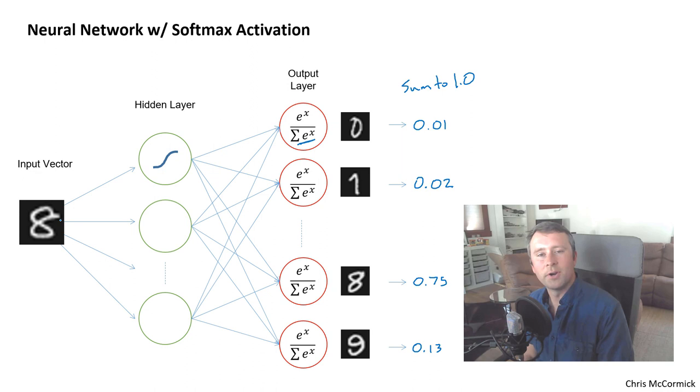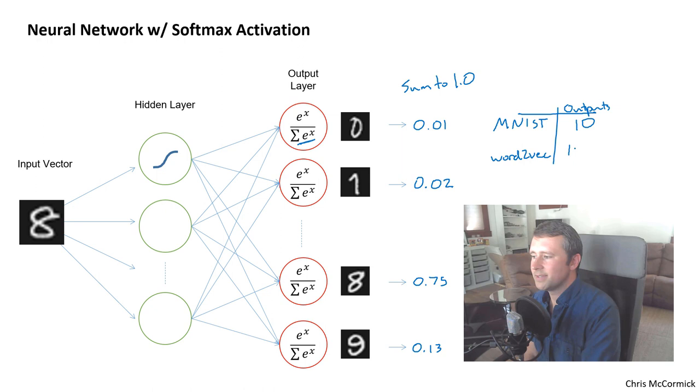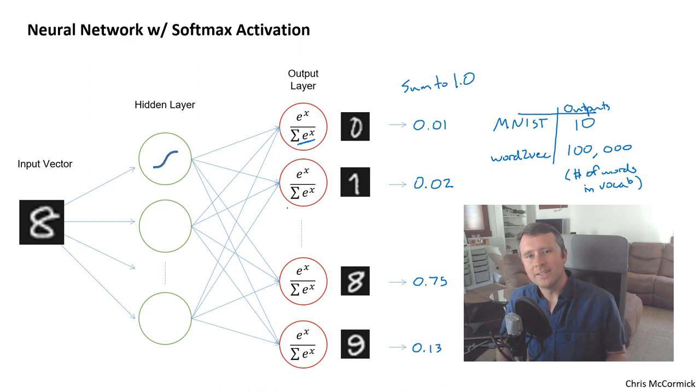And what that means is that, let's say we're training on this image of the number 8. We don't get to just update the weights for the number 8. We have to update the weights for all 10 outputs. And that's fine for MNIST because we only have 10 outputs. But with Word2Vec, we can have easily 100,000 outputs. And that's because we have one output for every word in our vocabulary. A good word model is trained on millions to billions of individual word pairs, an input word and an output word. And if we have to update the weights for 100,000 neurons for every single one of those word pairs, that's just an insane amount of compute.